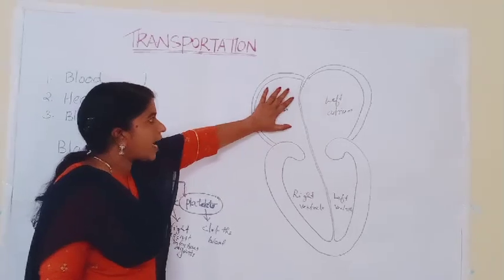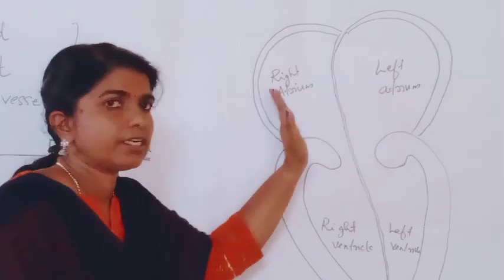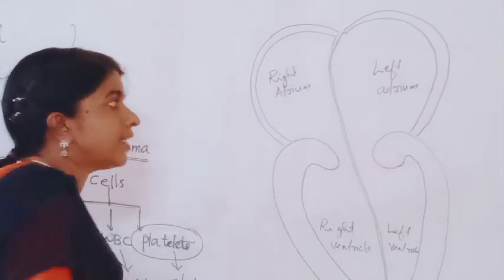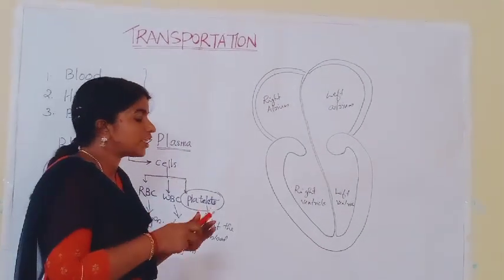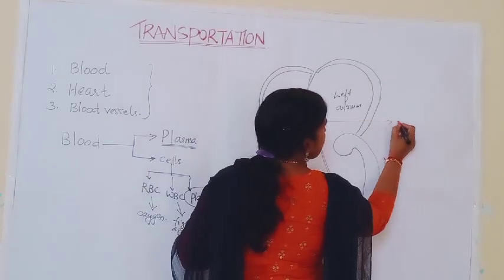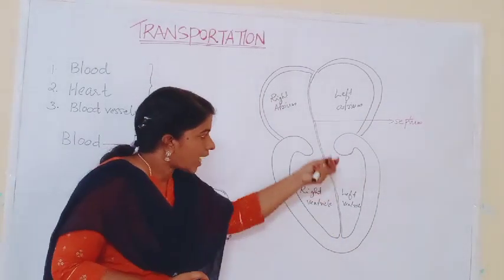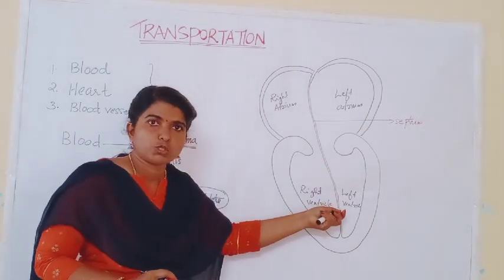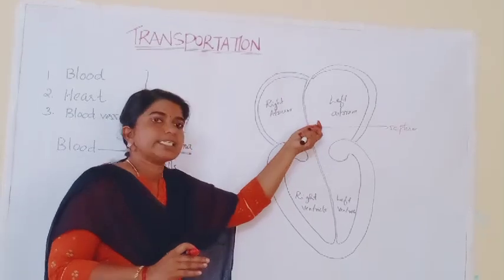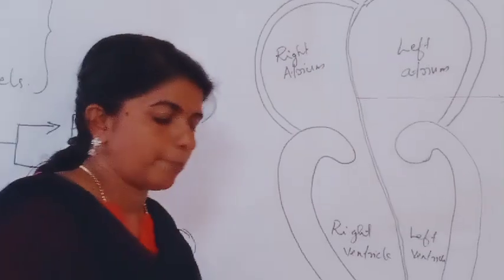Now look at the right atrium and left atrium — is there any connection? No. They are completely separated. That partition is known as the septum. The same kind of septum you can see between the ventricles as well — that is the interventricular septum. So here also a septum is present.